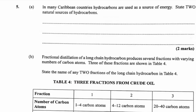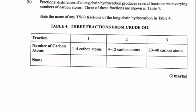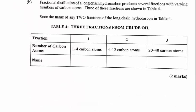Question 5 is on sources of hydrocarbons. In many Caribbean countries, hydrocarbons are used as a source of fuels. The two natural sources of hydrocarbons are crude oil (petroleum) and natural gas. From fractional distillation, fractions with 1–4 carbons would be refinery gases, 4–12 would be petrol or gasoline, and 20–40 would be fuel oil or lubricating oil.